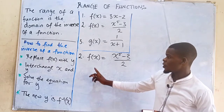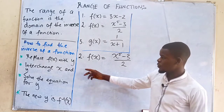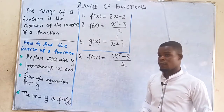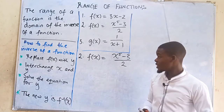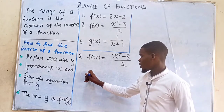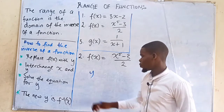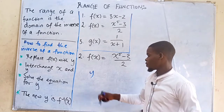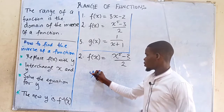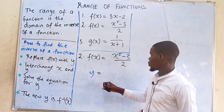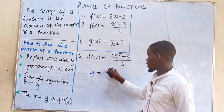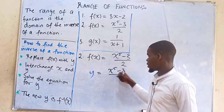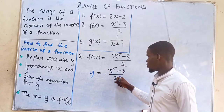To find the inverse of this function, we have to go through the following steps. The first step is replacing f(x) with y. So in place of f(x), we just put y. So we write y = (x⁵ - 3) / 2.